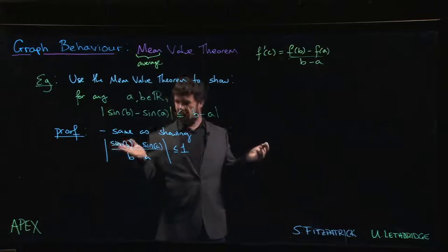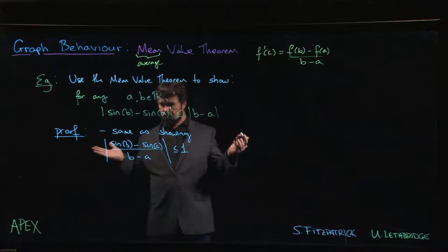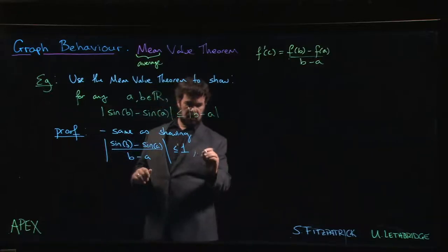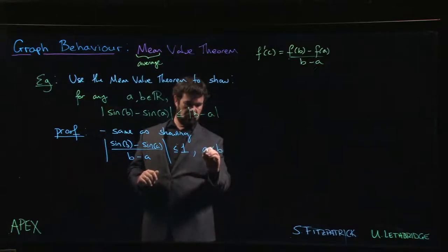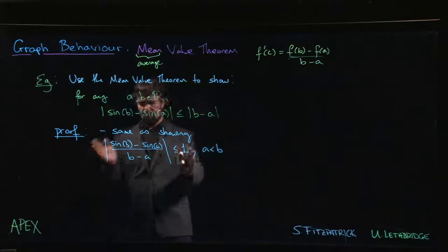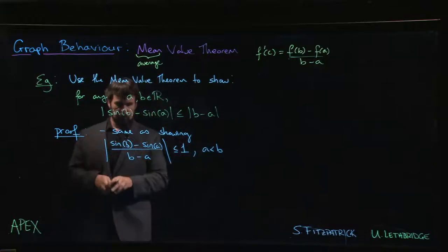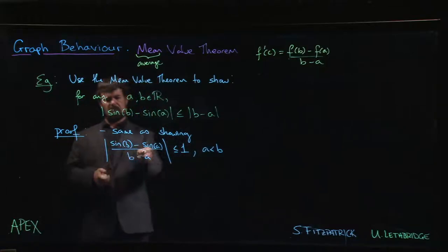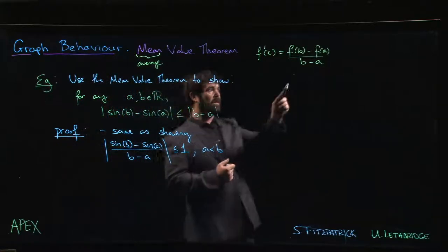In fact, let's assume that a is less than b, because if b is bigger we can turn things around. Now this should look a little bit like what we have up here in the statement of the Mean Value Theorem.